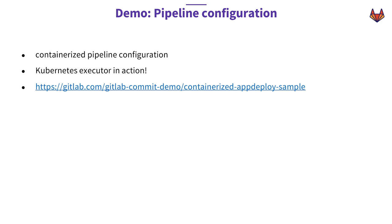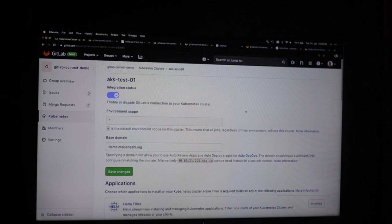First demo - let's see how this works in action. Just the UI - how you can integrate your Kubernetes cluster. You go into a project on the Kubernetes page. In this case it's a group, but it's nearly the same in a project folder. Here you can add a cluster or create a new one - a Google Kubernetes cluster, Amazon cluster, or integrate any other cluster: on-premise, Azure, it doesn't matter.